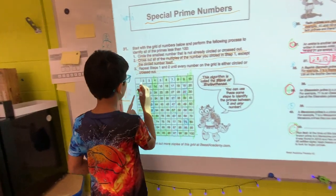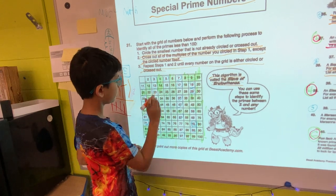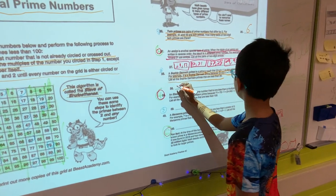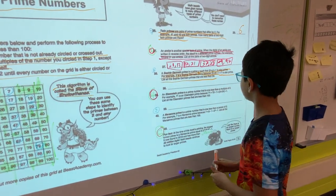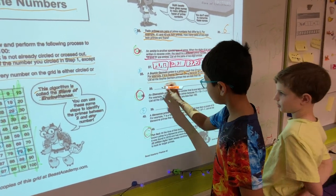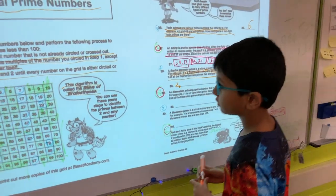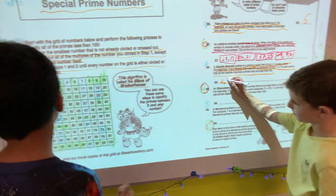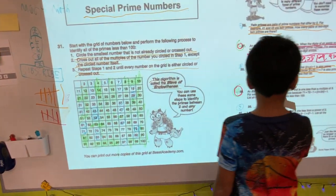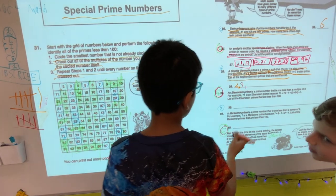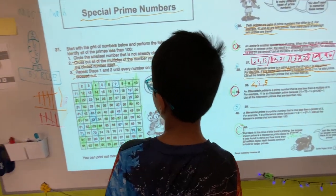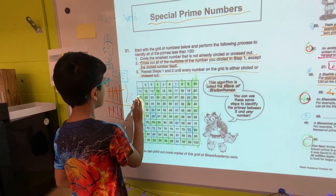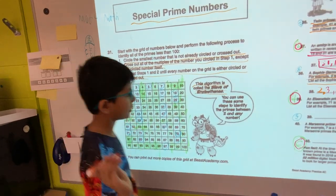Is 2 one? 2 times 2 is 4 plus 1 is 5, so 2 is one. 3 is already in the example. How about 5? 5 times 2 is 10 plus 1 is 11, so 5 is also one. 7 times 2 is 14 plus 1 is 15, nope. 11 times 2 is 22 plus 1 is 23, so 11 is one.